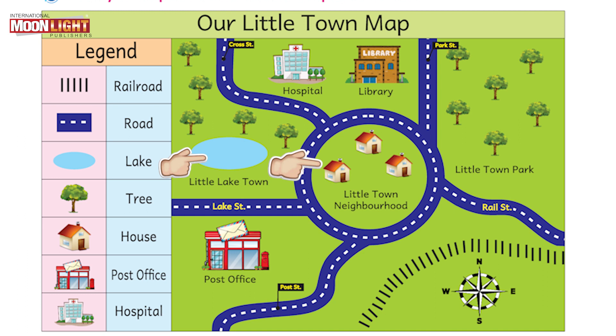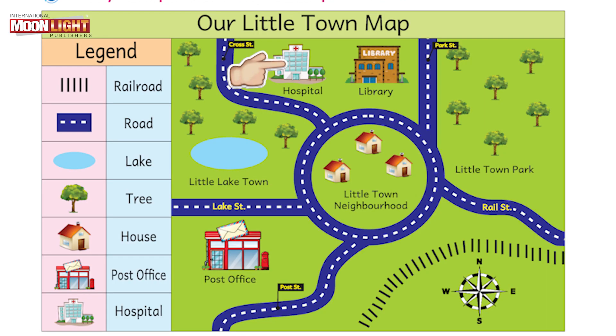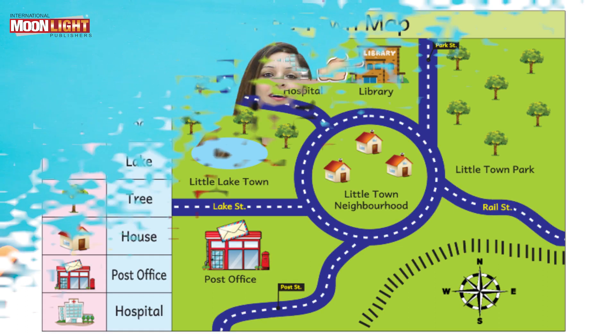Next question: what building is to the east of the hospital? First find out where the hospital is, then look at the east side. To the east of the hospital there is a library. Well done, students! I hope you have understood how to work on a map. We have also completed the reading and critical thinking competency of this unit.